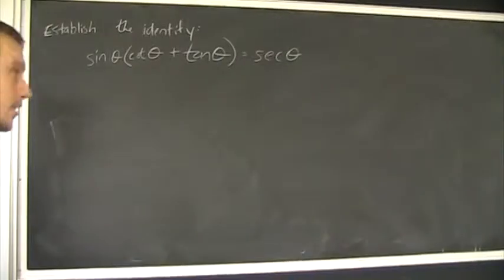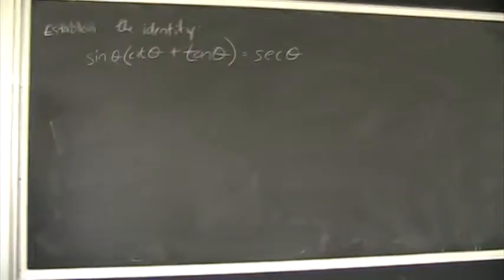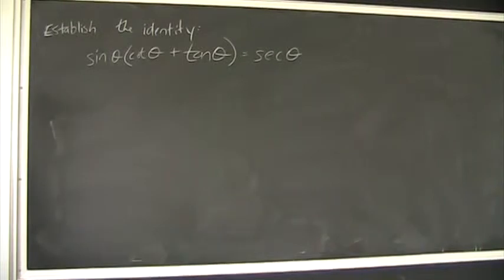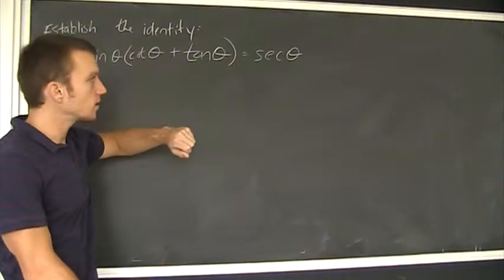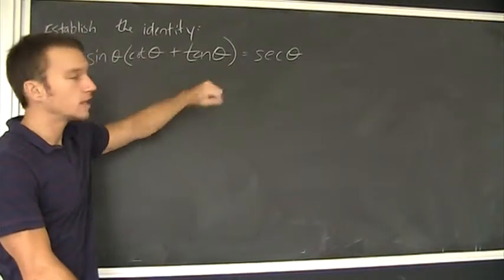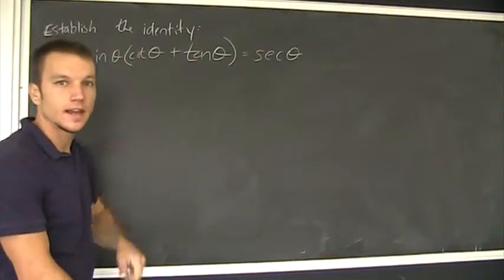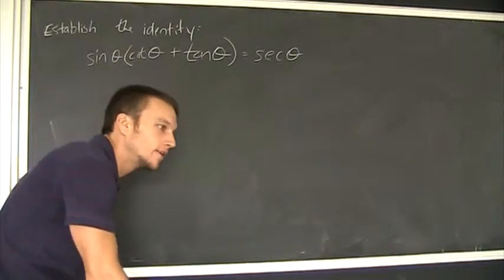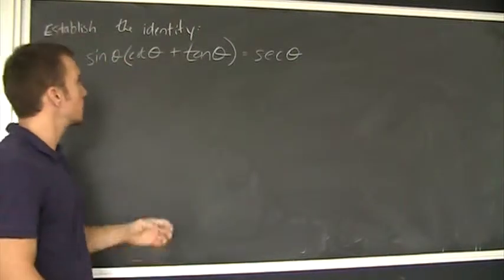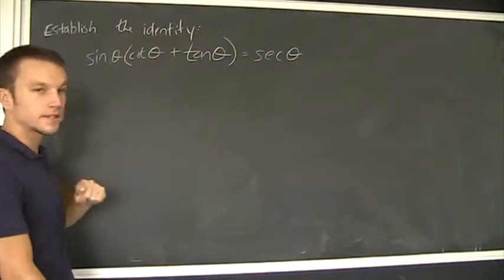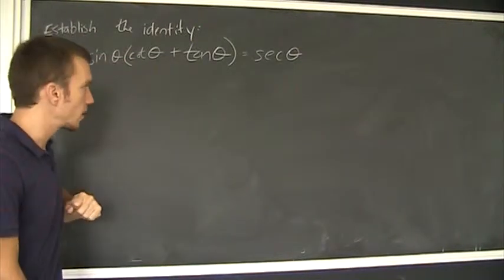Establish this identity: sine of theta times the sum of cotangent of theta and tangent of theta equals secant theta. This is a trig identity.